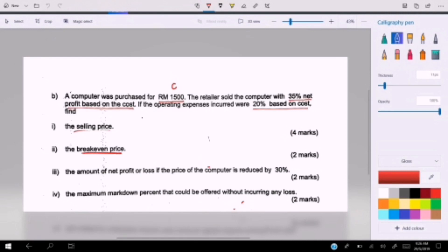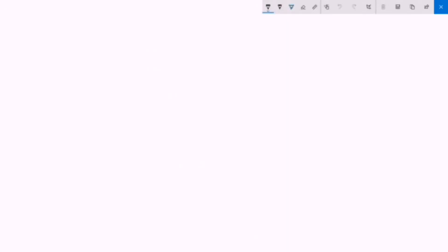Next, find the break-even price. The formula is BEP equals cost plus operating expenses: 1500 plus 300, so the break-even price is RM 1800.